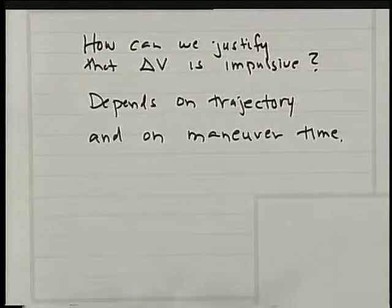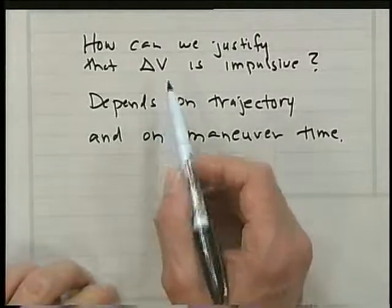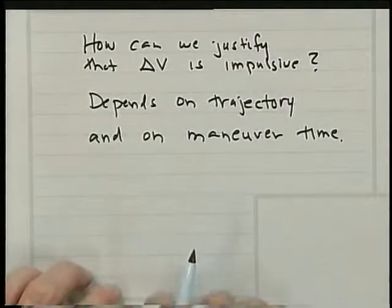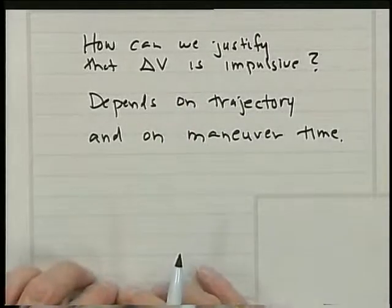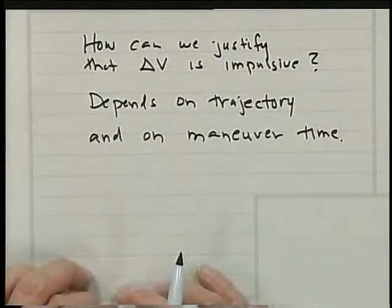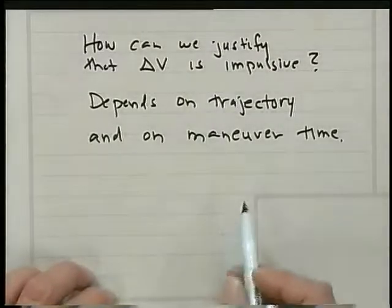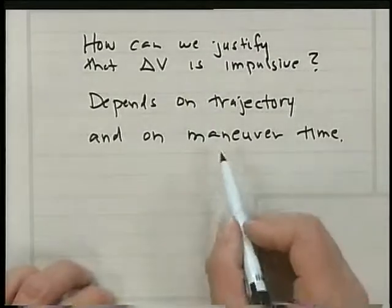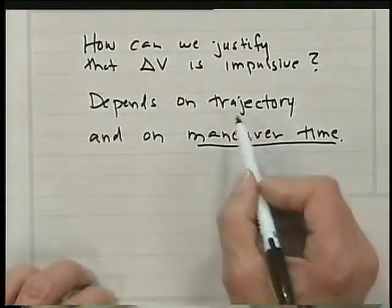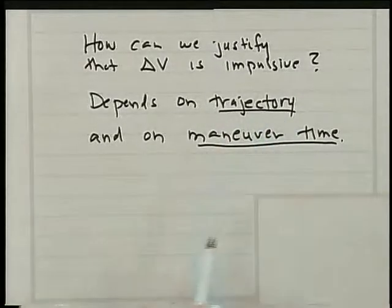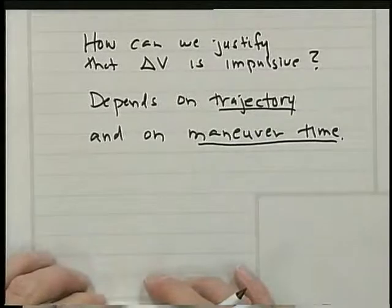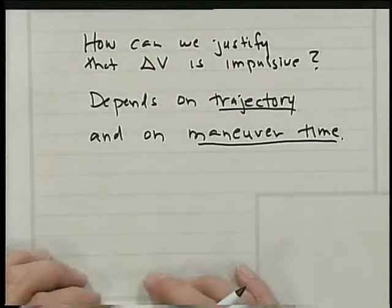You can always verify these things later on by doing a simulation in which you simply use Newton's law — F equals MA — and integrate the change in velocity to find out what really happens. So I would say that it really is a ratio: if the ratio of maneuver time to trajectory time is a very small number, then your error will also be a very small number.